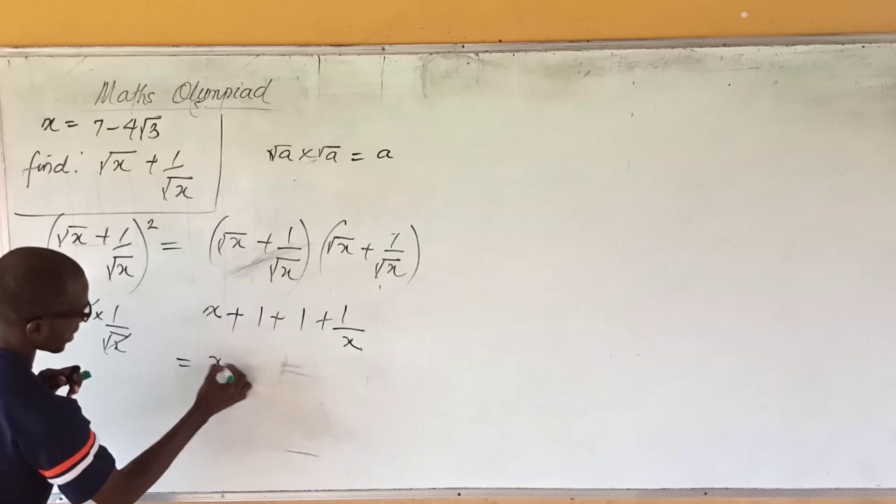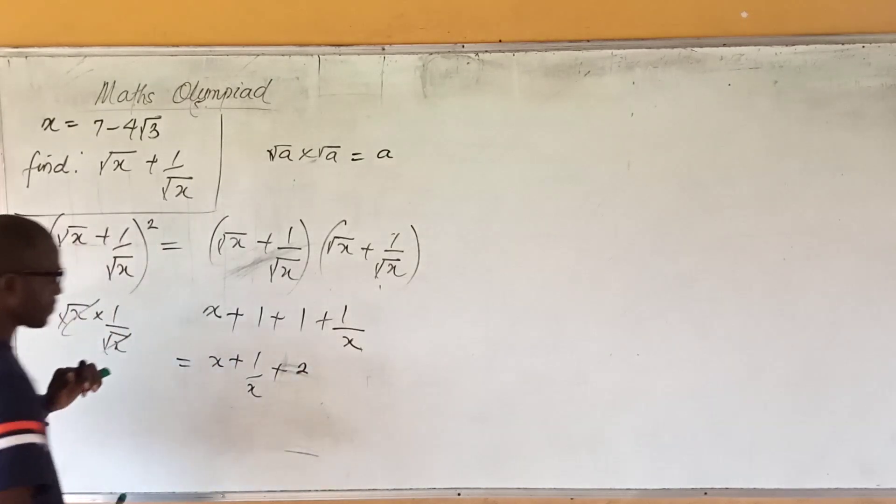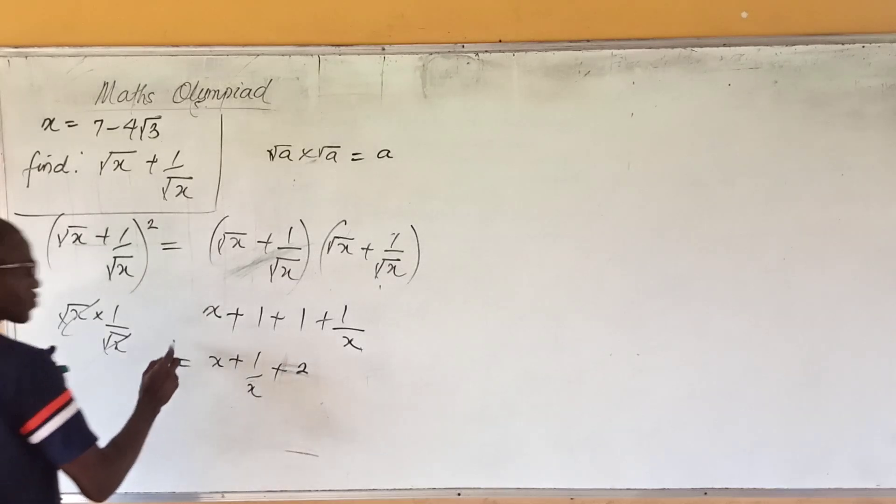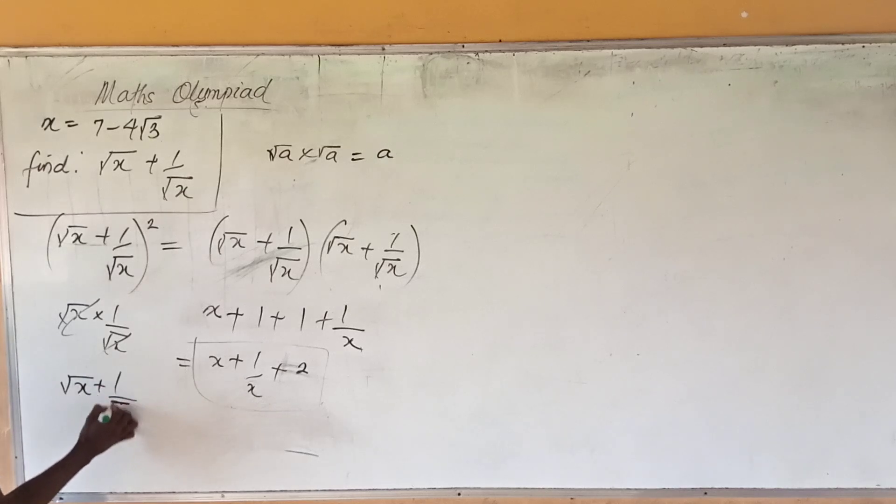So what have we here? It means that we have x + 1/x + 2 here. So this is what we get from squaring this. So (√x + 1/√x)² is equal to this.